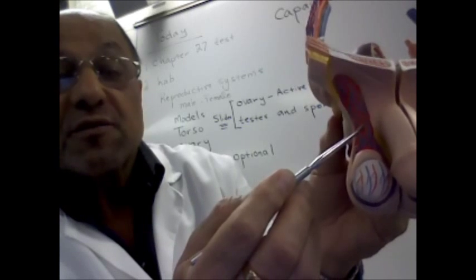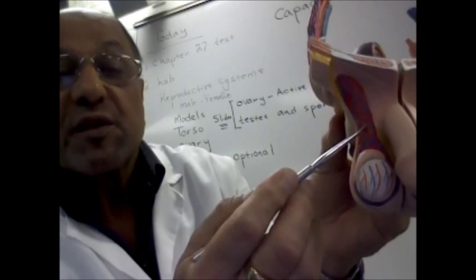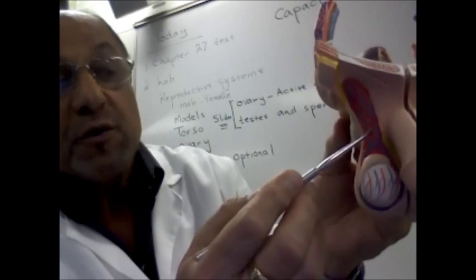The ductus deferens along with the blood vessels and the nerves are known as the spermatic cord.